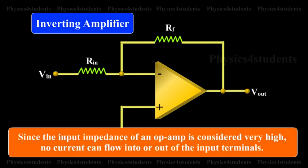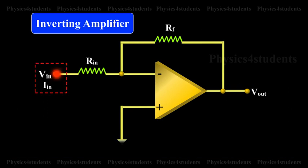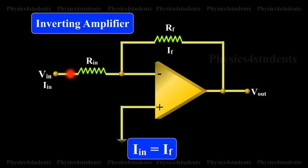Since the input impedance of an Op Amp is considered very high, no current can flow into or out of the input terminals. Therefore, IIN must flow through RF and is indicated by IF, the feedback current. Since RIN and RF are in series, then IIN is equal to IF.